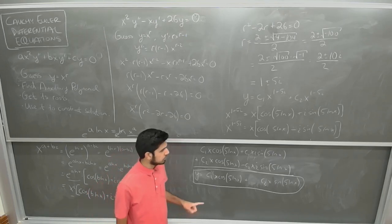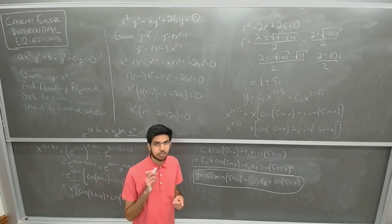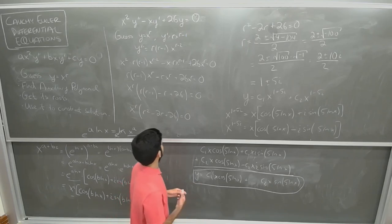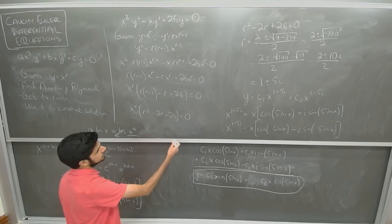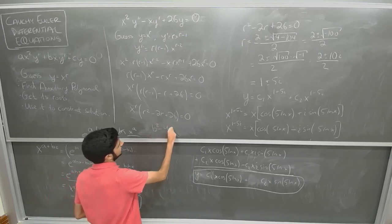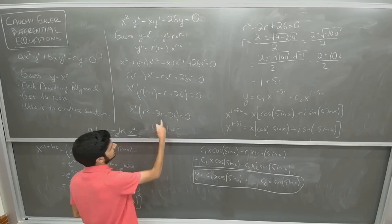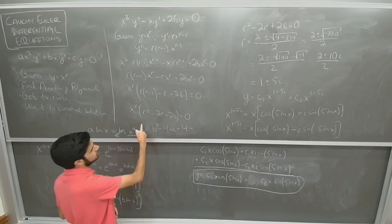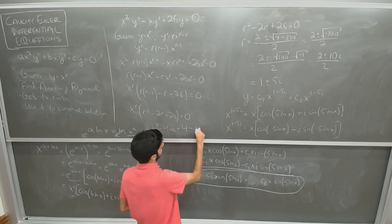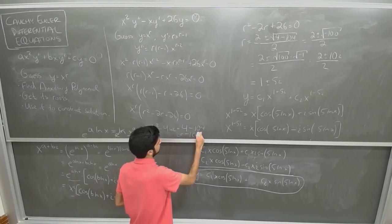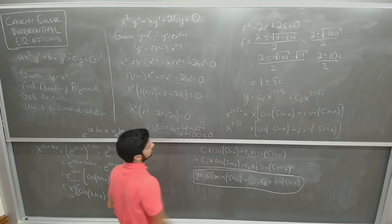Just to verify: the discriminant of our auxiliary polynomial r² − 2r + 26 is b² − 4ac = (−2)² − 4(1)(26) = 4 − 104 = −100, which is less than 0. So this confirms we were in the complex roots case.